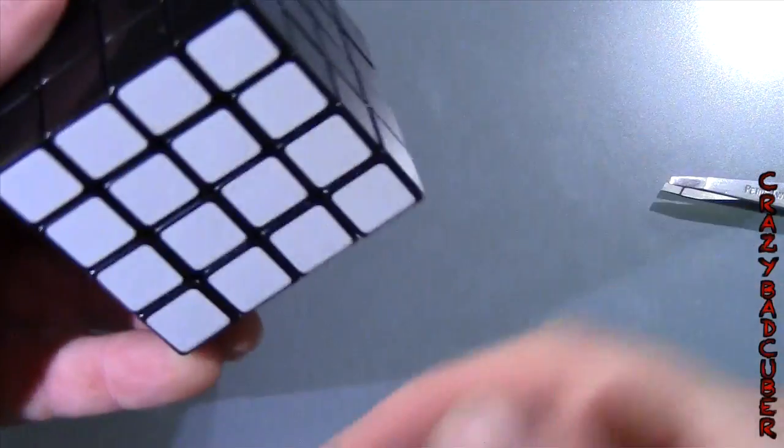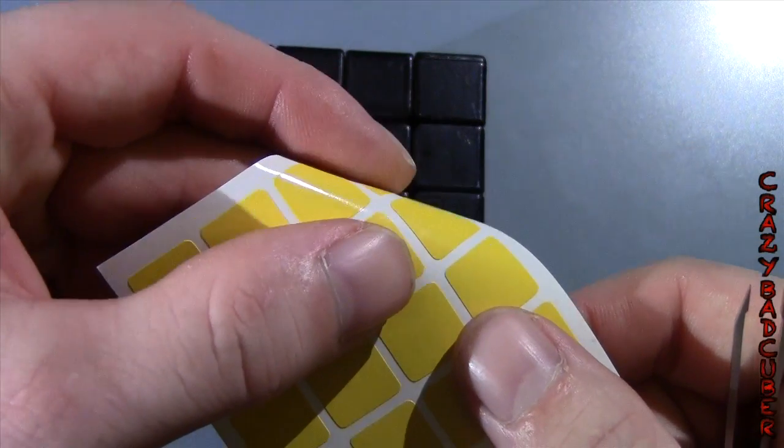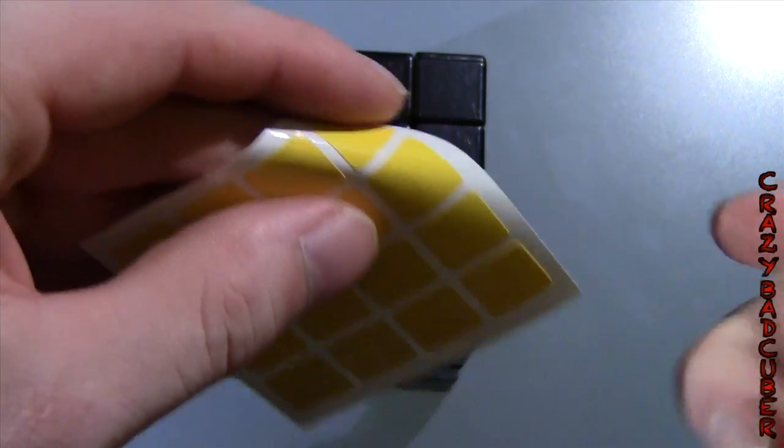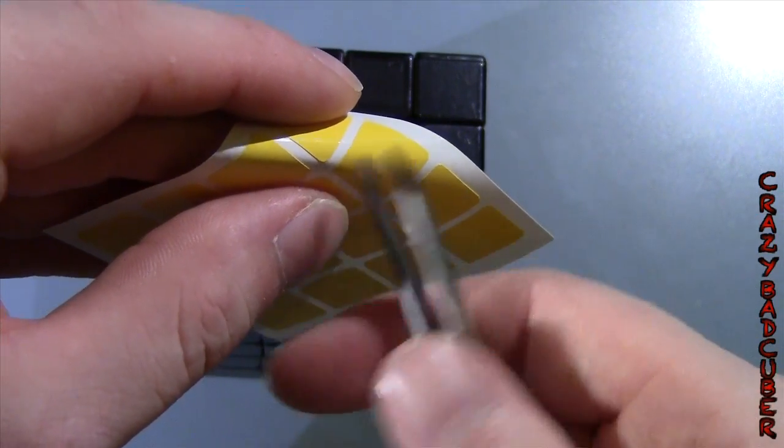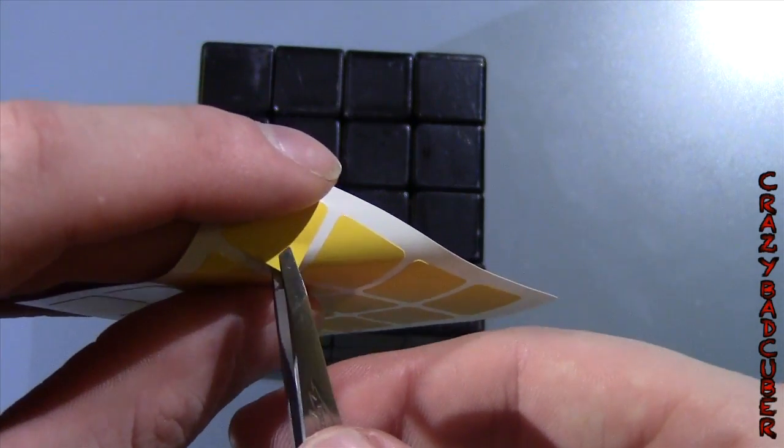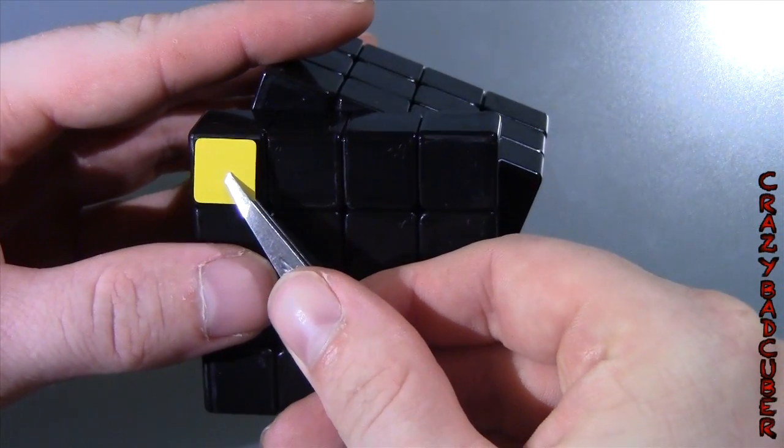Then after I'm done this side I always go to the opposite side. So again, bend it till it comes up a bit. A lot of the time if it doesn't come up, what you can do is just take your tweezers and flick it. Now it's up, now you can get under there and apply the sticker.